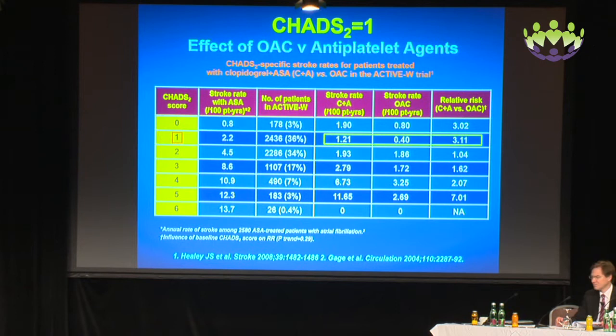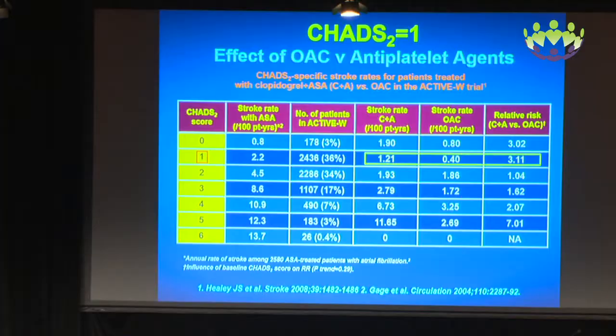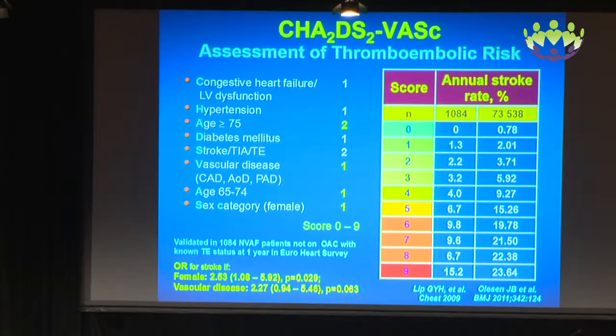It's no surprise that people began analyzing how valuable the CHADS2 scheme was. These data come from ACTIV. Looking at the second line — a CHADS2 score of one — patients treated with aspirin had a stroke rate of 2.2% per annum, those treated with clopidogrel and aspirin had 1.21%, but those treated with anticoagulants had only 0.4% per annum. In other words, there was a clear advantage of using an anticoagulant when the CHADS2 score was one, and it was no surprise that other scoring schemes arose.